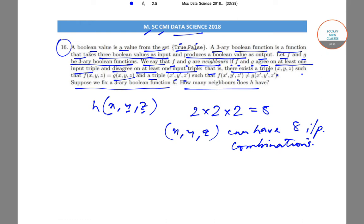And it can go up till seven input combinations, but it cannot agree on all input combinations because if two 3-ary boolean functions agree on all the arguments, on all the input conditions, in that case this will not be a neighbor.